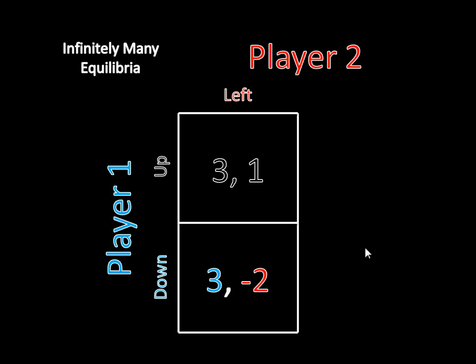There are infinitely many equilibria in what we call partially mixed strategies. A partially mixed strategy Nash equilibrium is a Nash equilibrium where one player plays a pure strategy and another player plays a mixed strategy. In this case, Player 2 is the one playing a pure strategy. She's always playing Left. And Player 1 is playing a mixed strategy where he goes up with probability P and down with probability 1 minus P.